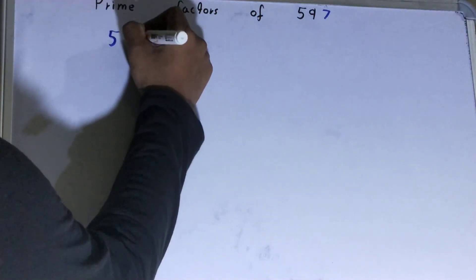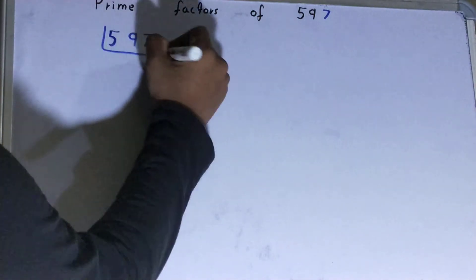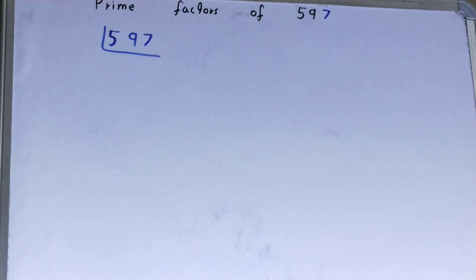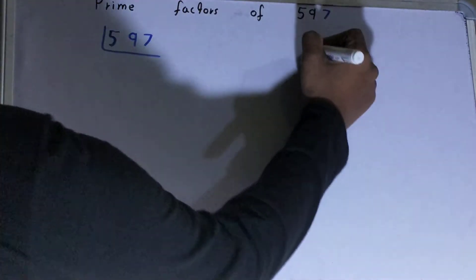Alright, before solving this any further, you must know what prime numbers are. Prime numbers are numbers that are divisible by one and the number itself, like two, three, five, seven, and so on.